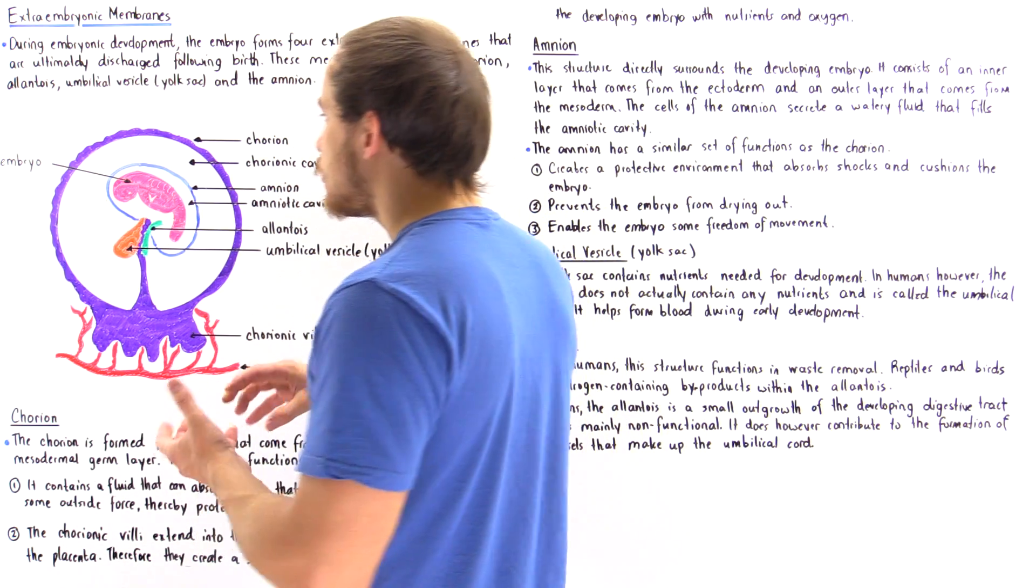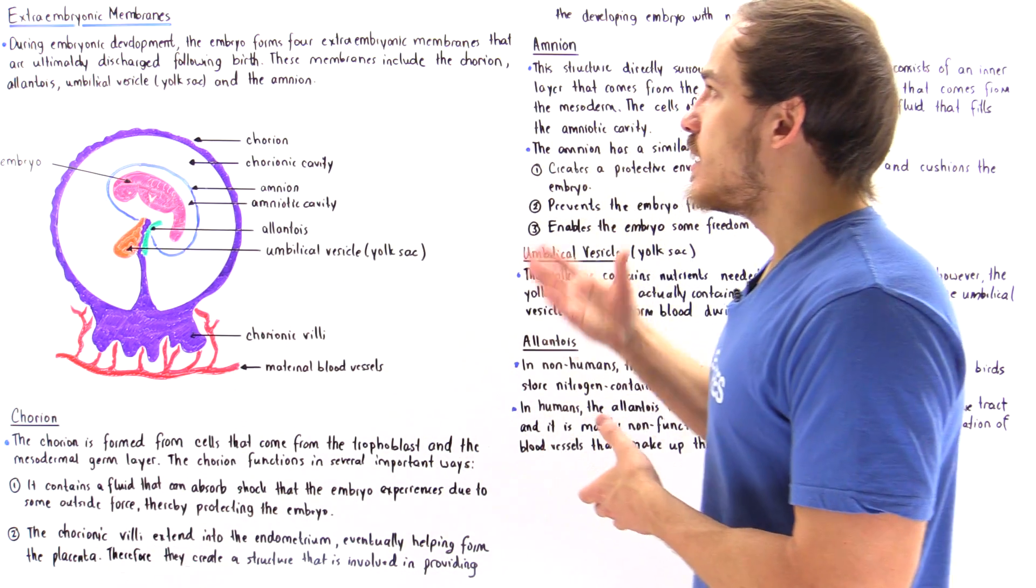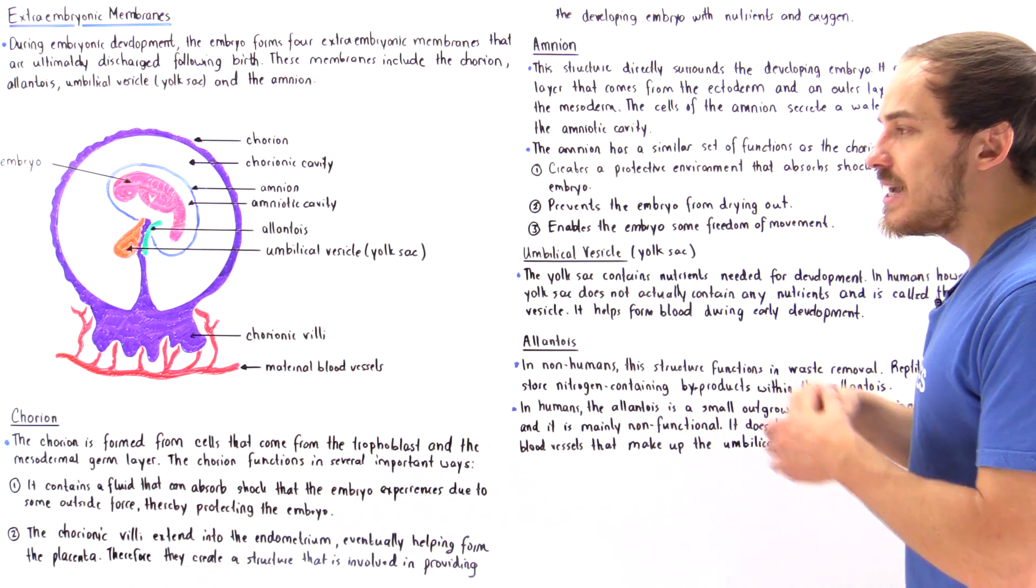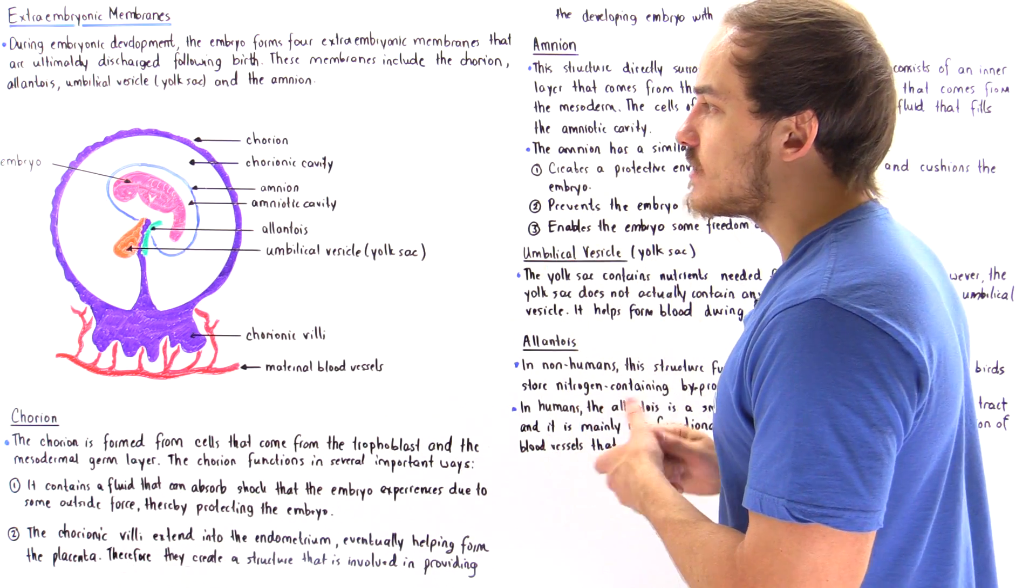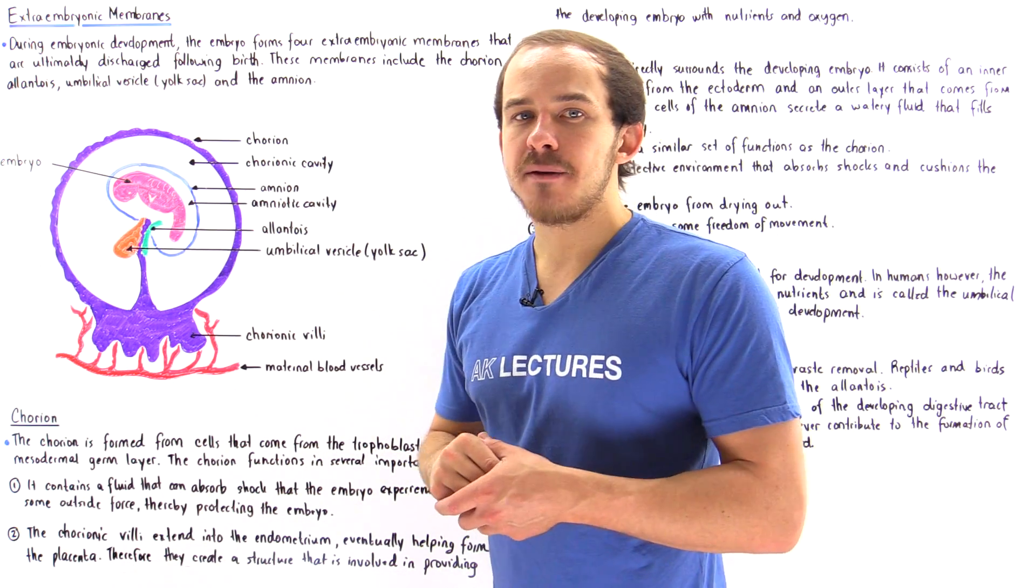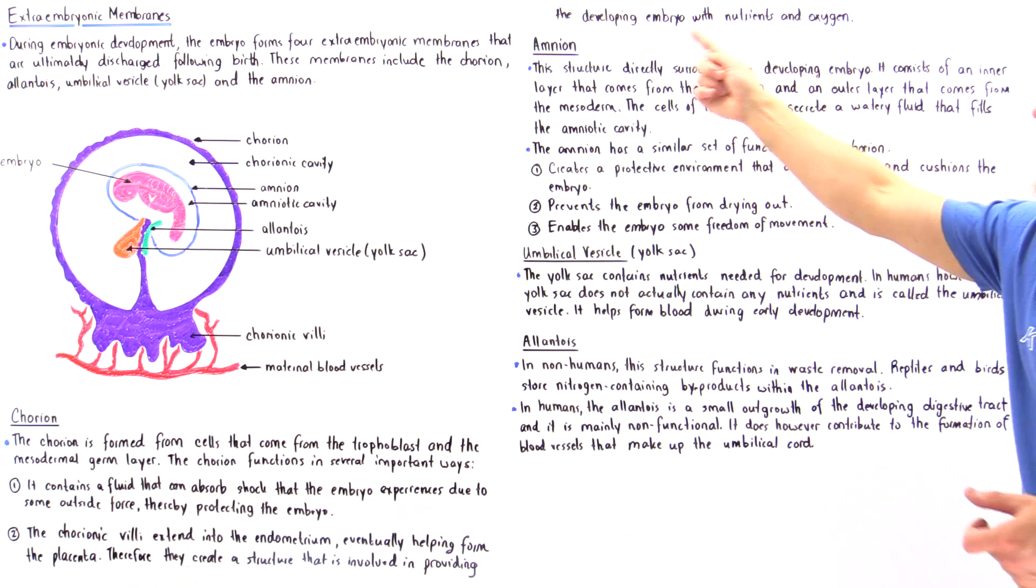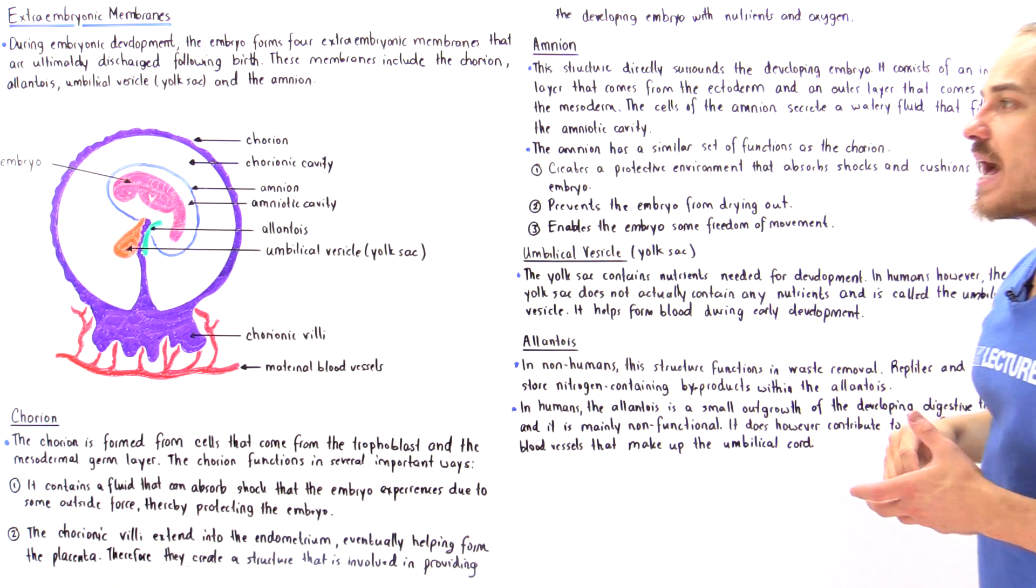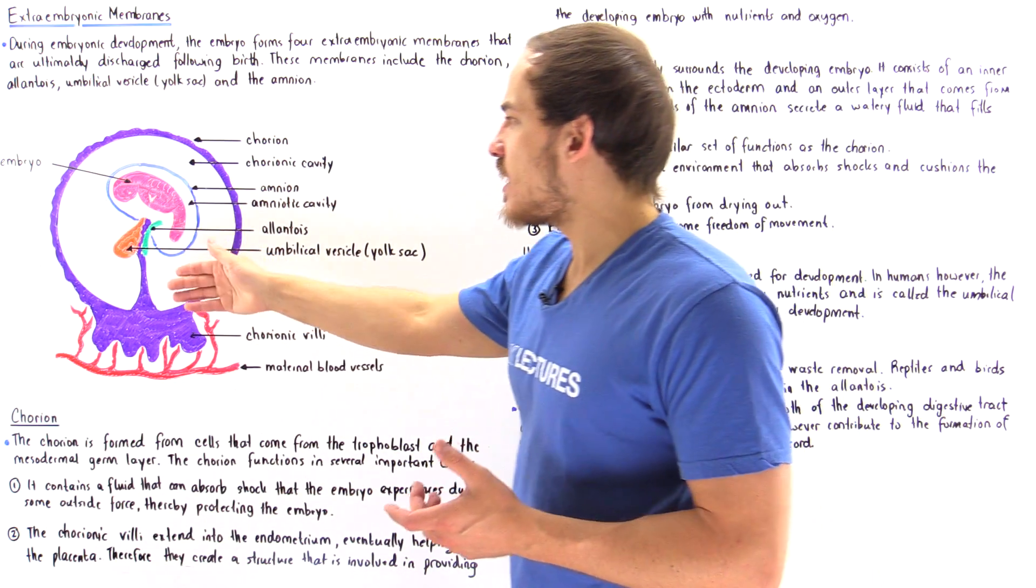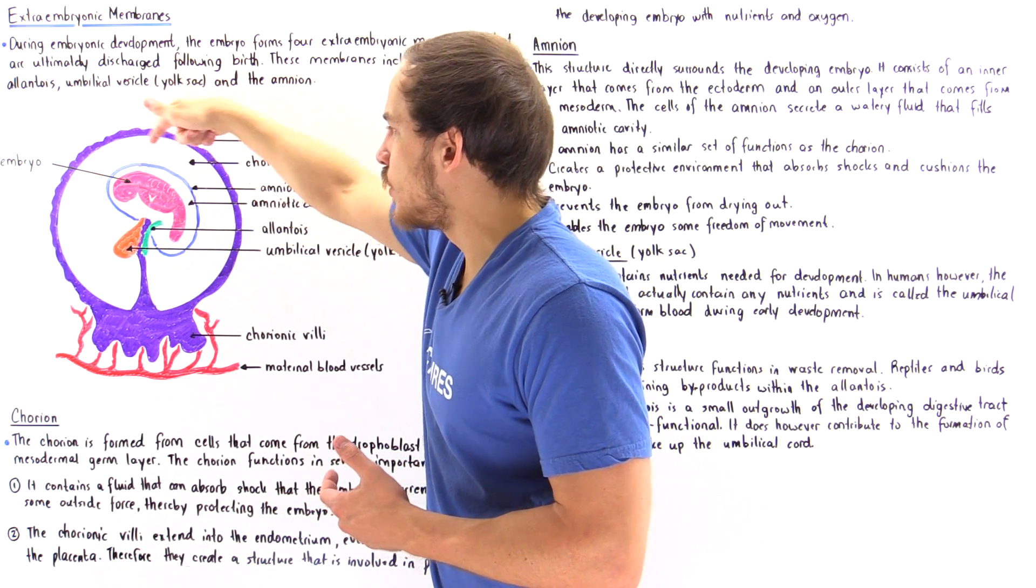Now let's move on to the embryonic membrane, the extra embryonic membrane that actually encloses that fetus itself. This is known as the amnion. So the amnion is an extra embryonic membrane that directly surrounds that developing embryo. And in this diagram, the amnion is this blue structure here.